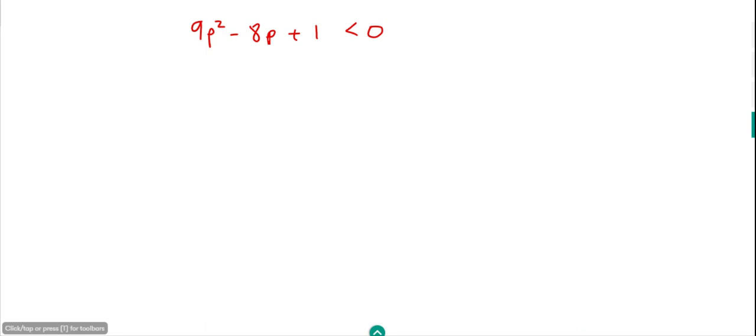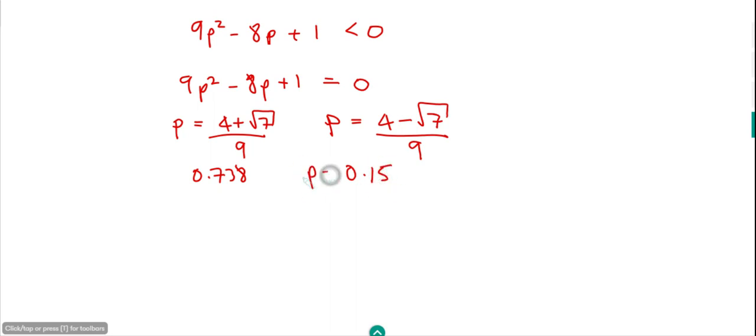If we then try and find the roots of this, 9P squared minus 8P plus 1. So we find when would it actually equal 0. That would be when the roots are. And if we put that into the calculator, we get two solutions. So we get P is 4 plus root 7 over 9, and also P is 4 minus root 7 over 9. So we'll write those as decimals. So 0.738. And also the other one, 0.15. So these are the two values of P.